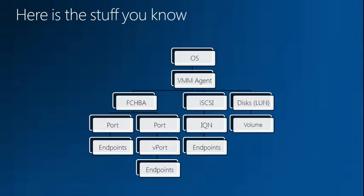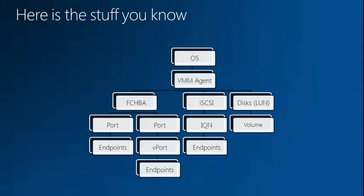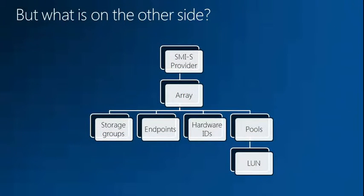So what do we get? From the Hyper-V host we already have HBA information, iSCSI information, and LUN information — all stored in our database. With 2012, we now also talk to SMIS providers and the arrays. If you make a change in VMM, the storage admin will see it immediately depending on how fast they refresh. For them making a change outside VMM, it's 24 hours before we see it.